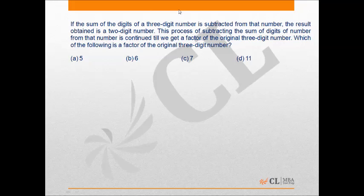The sum of digits of a three-digit number is subtracted from that number. The result obtained is a two-digit number. First, we need to find all those three-digit numbers that satisfy this condition.